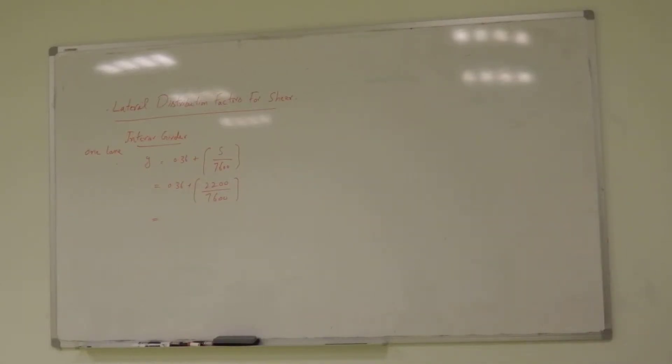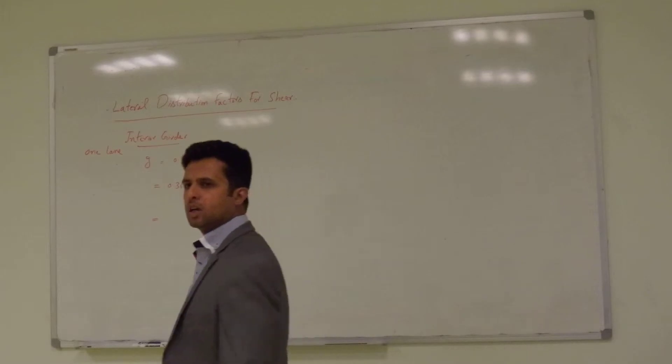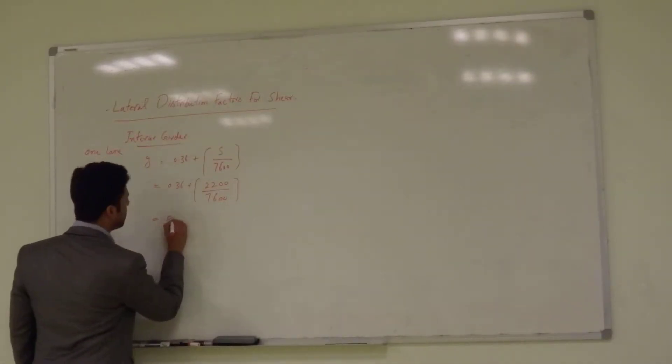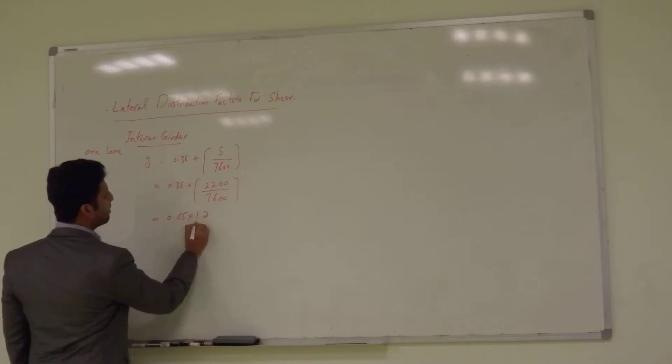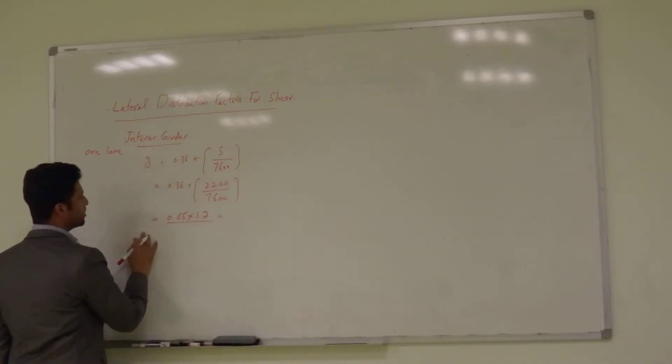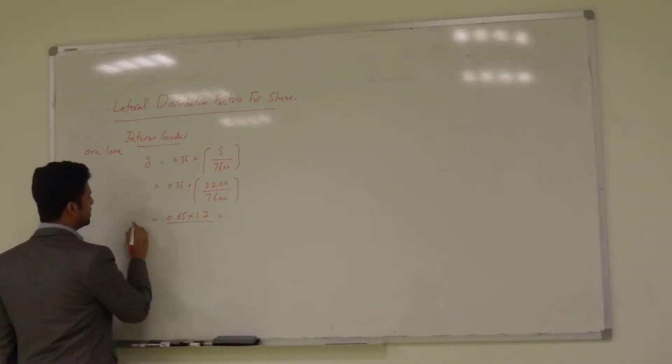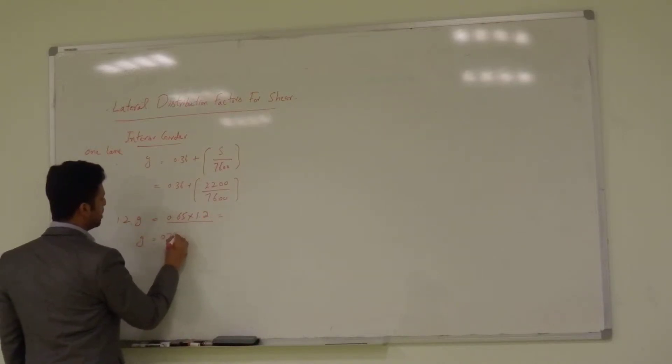0.65. And we have to multiply this by 1.2 for multiple lane presence factor. So, G will be equal to 0.78. That's all.